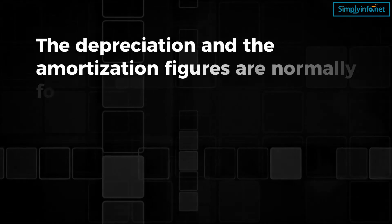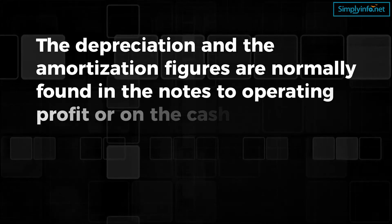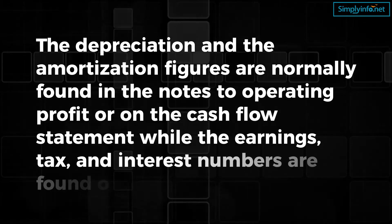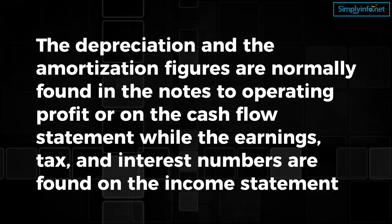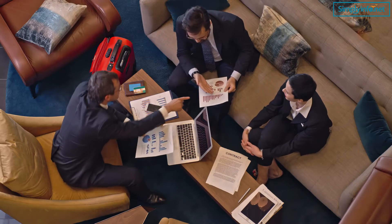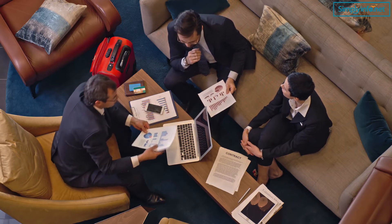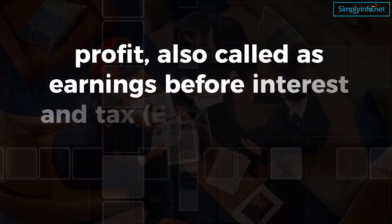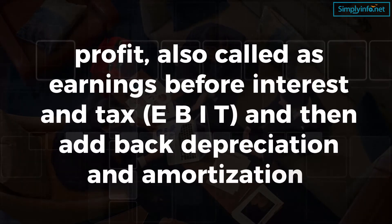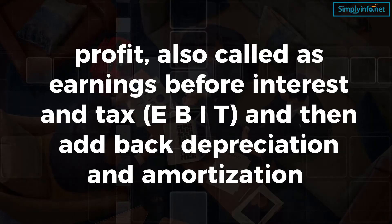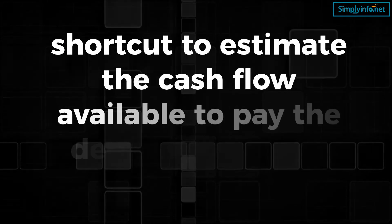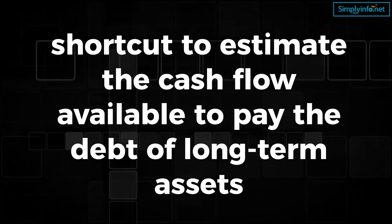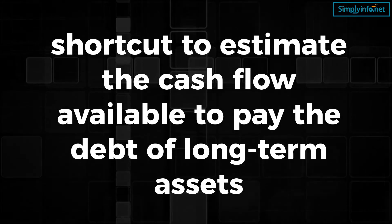The depreciation and amortization figures are normally found in the notes to operating profit or on the cash flow statement, while the earnings, tax, and interest numbers are found on the income statement. The usual shortcut to calculate EBITDA is to start with operating profit, also called Earnings Before Interest and Tax (EBIT), and then add back depreciation and amortization. EBITDA can also be used as a shortcut to estimate the cash flow available to pay the debt of long-term assets.